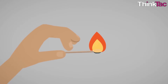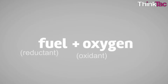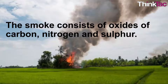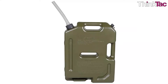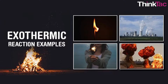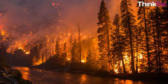Combustion or burning is a very important process. Speaking in terms of chemistry, it is a reaction between the fuel (the reductant) and oxygen (the oxidant) to produce oxidized products and releasing smoke. The smoke consists of oxides of carbon, nitrogen, and sulfur — these elements are present in the fuel and get oxidized to become part of the smoke. Combustion results in the generation of a lot of heat, making the process self-sustaining, so this is a good example of an exothermic reaction.